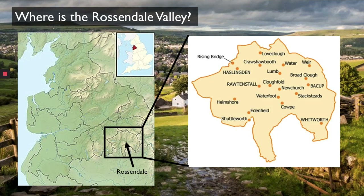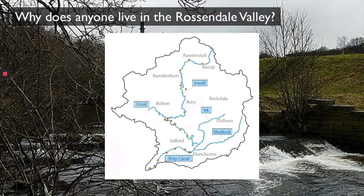But why would settlements be on the valley floor rather than the valley sides? The reason behind this is the River Irwell. The Irwell's source is above Weir in the Rossendale Valley; it flows down through Bacup, through Rawtenstall, through Ramsbottom, into Bury, and continues until it makes its way into Manchester. The main reason that people have settled on the valley floor is access to water through the River Irwell, and we know that water is essential to human survival.